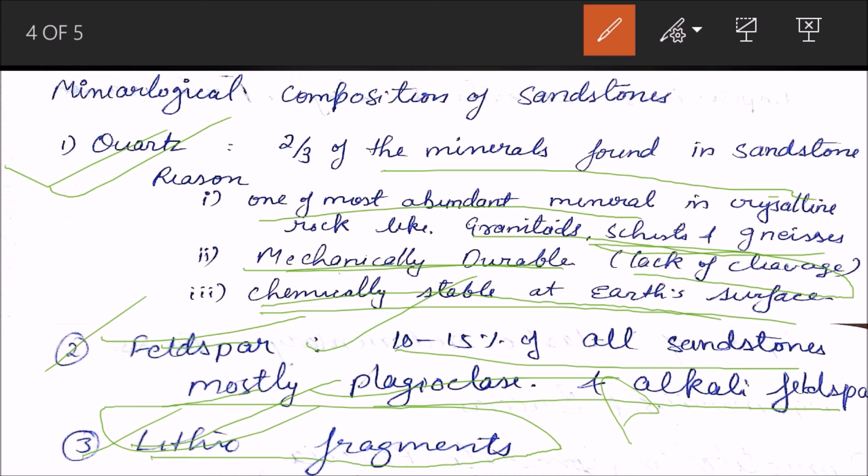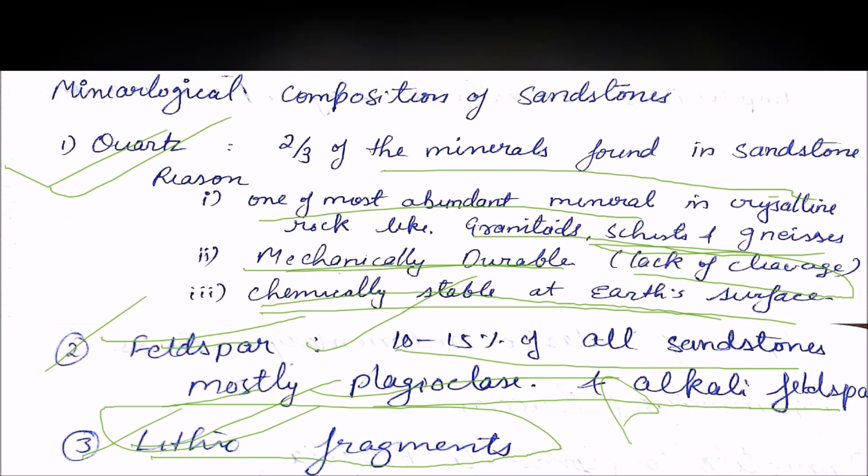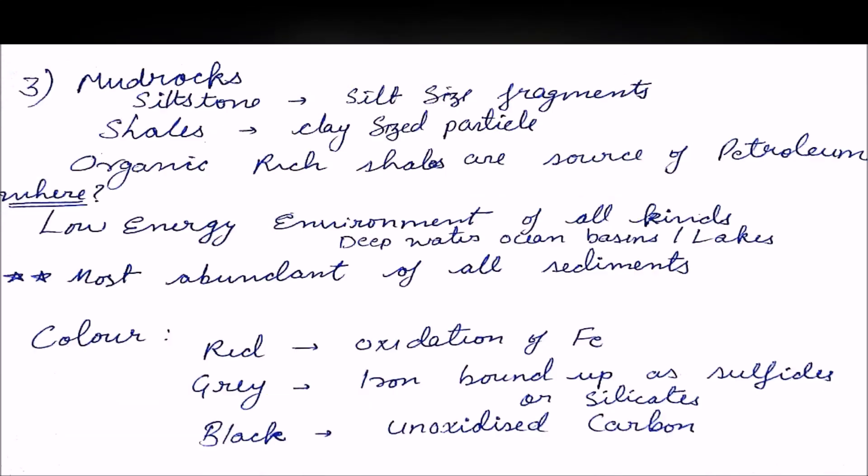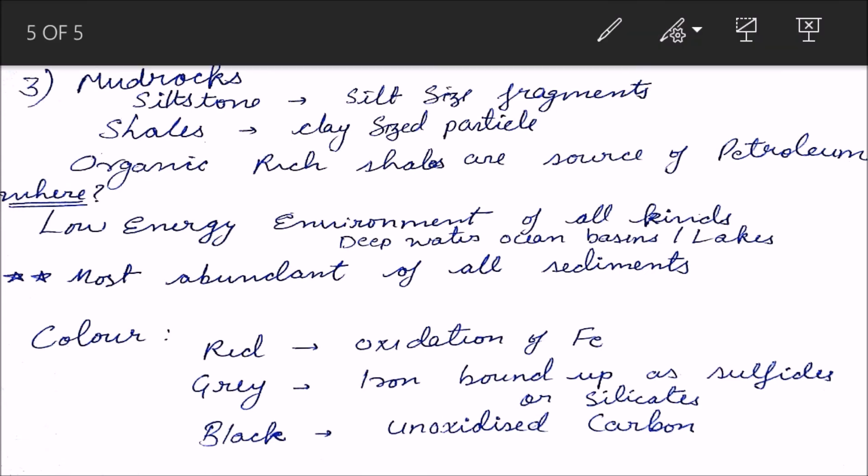Next, third is - first was conglomerate and breccia, second was sandstone, third is mudrocks. Now mudrock is basically beyond 50 percent silt - silt-size fragments in this triangular diagram. Beyond 50 percent it was shale. Clay-size particles are there. Organic-rich shales are source of petroleum.